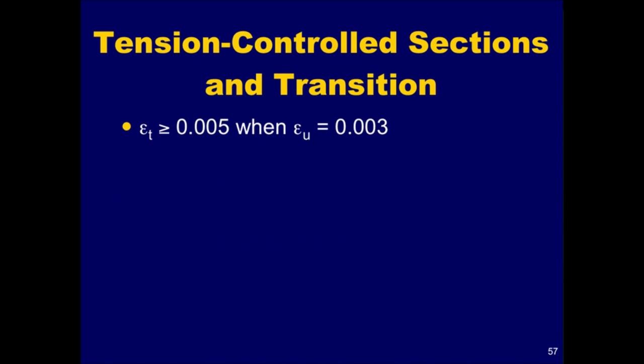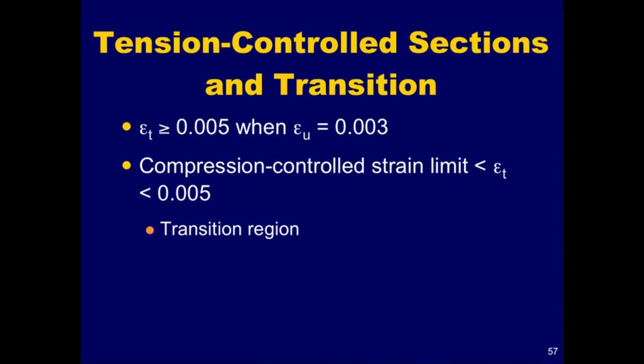According to section 10.3.4, sections are tension-controlled when the net tensile strain in the extreme tension steel, epsilon sub T, is greater than or equal to 0.005, just as the compression strain in the concrete reaches its assumed strain limit, epsilon sub U of 0.003. Sections with epsilon T between the compression-controlled strain limit and 0.005 are said to be in a transition region between compression-controlled and tension-controlled sections.